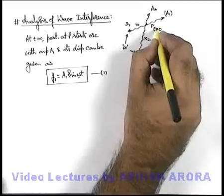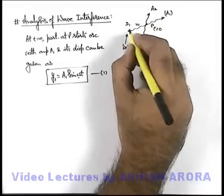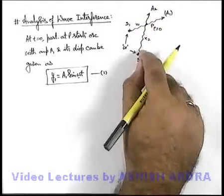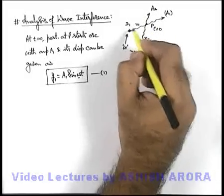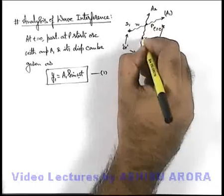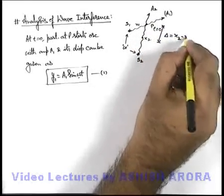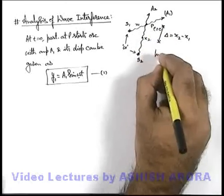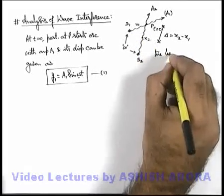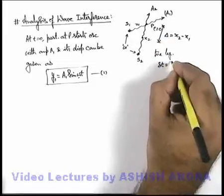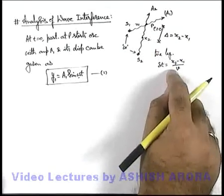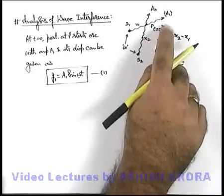We take t equal to zero as the time when P starts oscillating under the influence of source S1. At this instant, since the two waves exist in the same medium, they travel with the same speed. So when the first wave arrives at P, the second wave would still be mid-way. The path difference from point P to the second wave can simply be written as x2 minus x1. So we can easily calculate the time lag in superposition of the two waves at P: Δt = (x2 − x1) / v, where v is the speed of wave propagation.